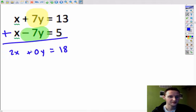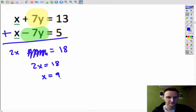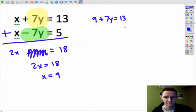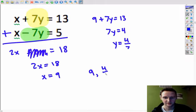This 0y, this is the thing that we wanted because now we no longer have a y. We just have 2x equals 18. And you can finish solving that, x equals 9. And just like substitution, we are going to take the x, plug it back in to the original. We get, instead of x we'll have a 9 plus 7y equals 13. Subtract 9, subtract 9. 7y equals 4. And y equals 4 sevenths. So our solution is 9 comma 4 sevenths.